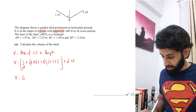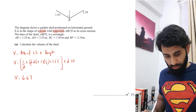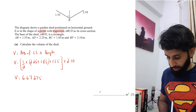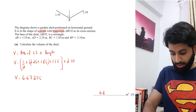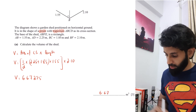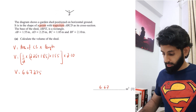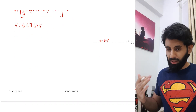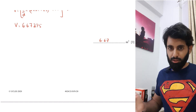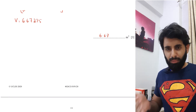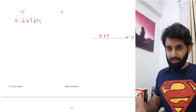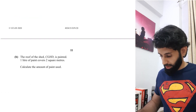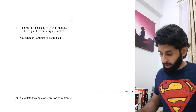Working this out gives 6.67275, which correct to three significant figures is 6.67. As you know, the standard rule is to give non-exact answers correct to three significant figures. There's often confusion about this, but I posted a snapshot of an email exchange with Cambridge on my Instagram — you can check that out.